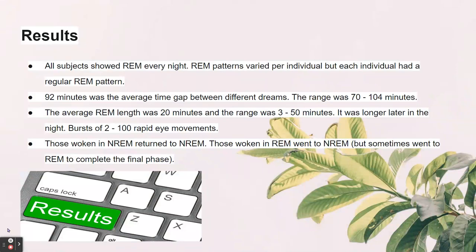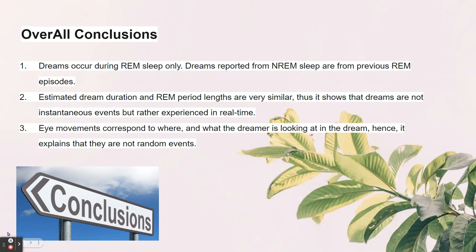The overall results showed that all subjects showed REM every night. REM patterns varied per individual but each individual had a regular REM pattern. The average time gap between different dreams was 92 minutes, with a range of 71 minutes. The average REM length was 20 minutes with a range of 3 to 15 minutes, and it was longer later in the night. There were bursts of 2 to 100 rapid eye movements. Those woken in non-REM returned to REM; those woken in REM went to non-REM but sometimes returned to REM to complete the final phase.